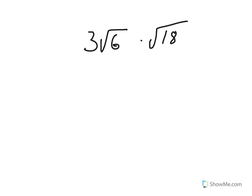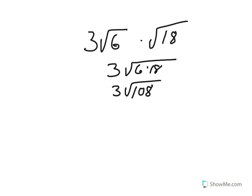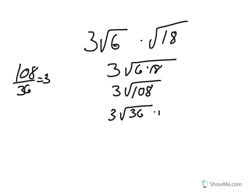By multiplying these two radicals together, we get 3 times the square root of 6 times 18, or 3 square root of 108. Since the 3 is on the outside of the radical, it stays on the outside. Now we want to reduce the square root of 108. Using your perfect squares list, you can see that 108 is divisible by 36 three times. So we rewrite this radical as the square root of 36 times the square root of 3. Simplifying, we get 3 times 6 root of 3. 3 times 6 is 18, so our final answer is 18 root of 3.